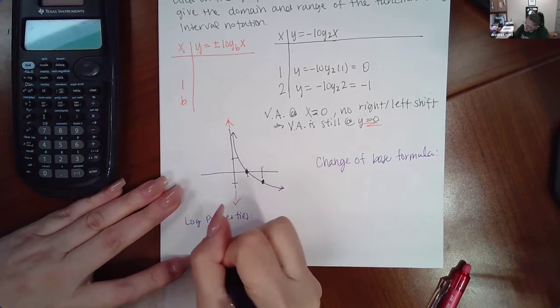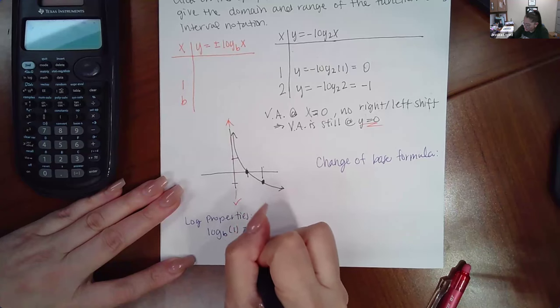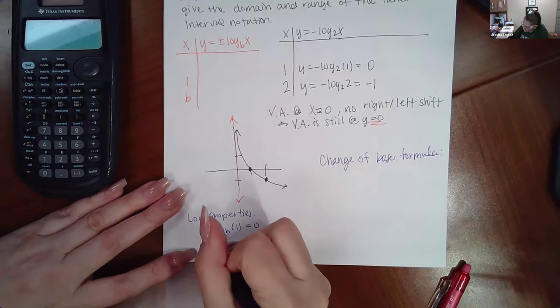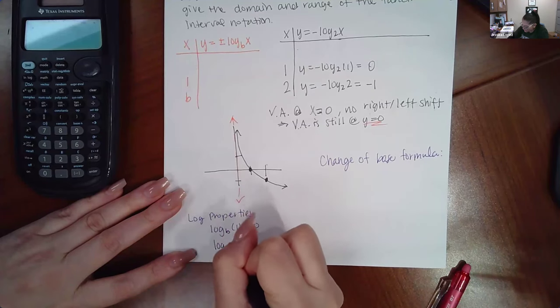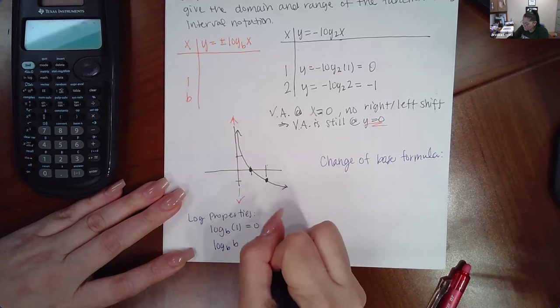But I was using the log properties. And the log properties I was using, is if you have log of any base of one, it automatically equals zero, it doesn't matter what that base is. The other property I was using is that if you have base and then that's also your argument, it does just equal one.